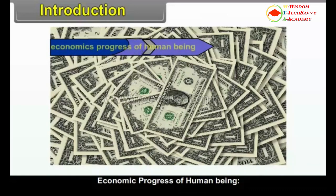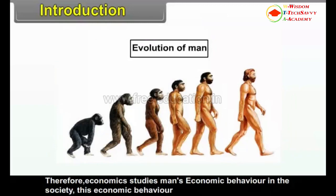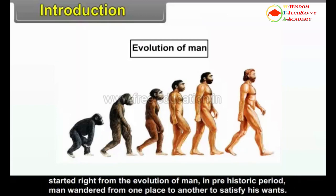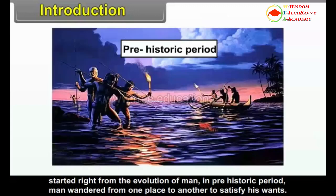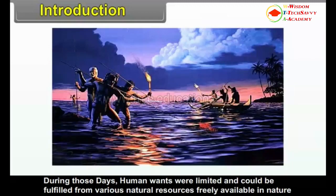Economic Progress of a Human Being: Man is a social animal and economics is an important branch of social science. Therefore, economics studies man's economic behavior in the society. This economic behavior started right from the evolution of man. In the prehistoric period, man wandered from one place to another to satisfy his wants. During those days, human wants were limited and could be fulfilled from various natural resources freely available in nature.